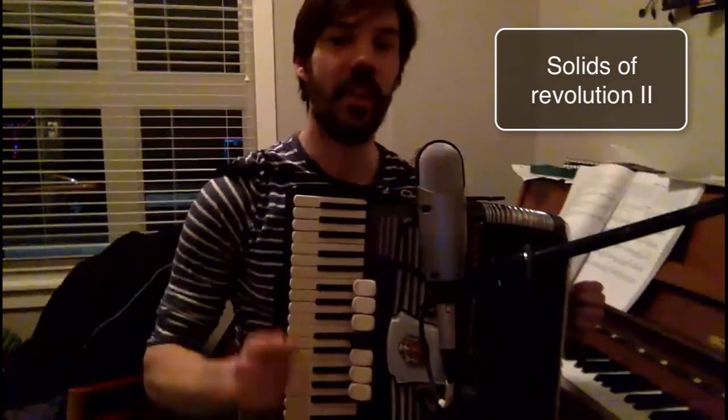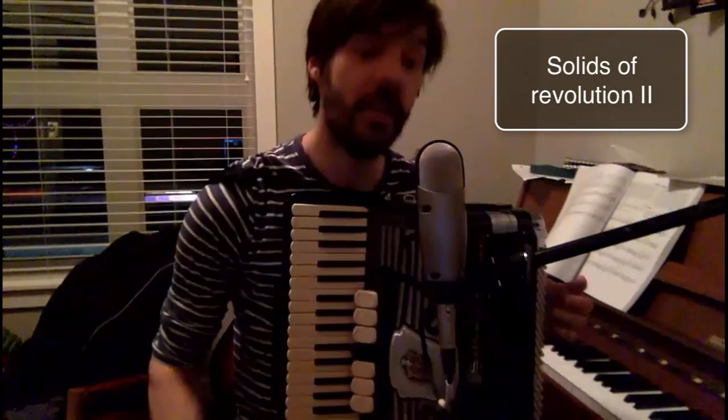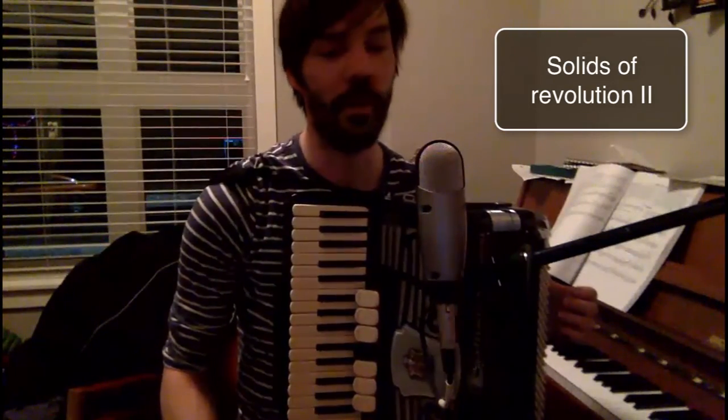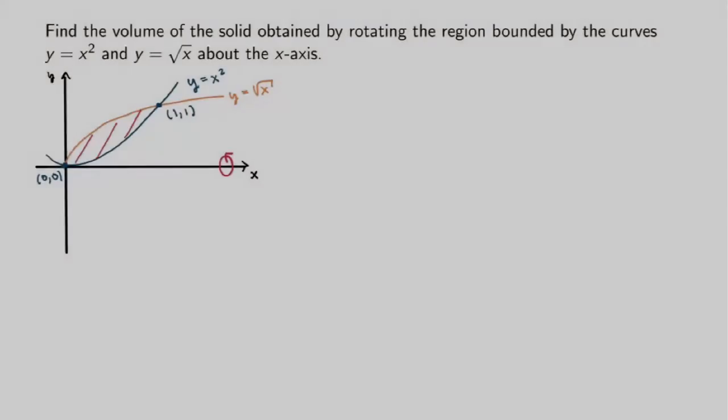In this video we'll see another method to calculate the volume of solids of revolution, which is to use cylindrical shells instead of discs or washers. I want to calculate the volume of the same solid of revolution from the previous video but using a different method — slicing the solid into cylindrical shells instead of washers.